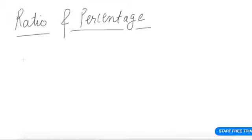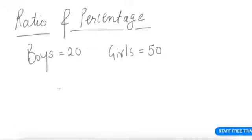Let's take an example to understand better. The number of boys in the class are 20 and the girls are 50. If somebody says what's the ratio of boys to girls?